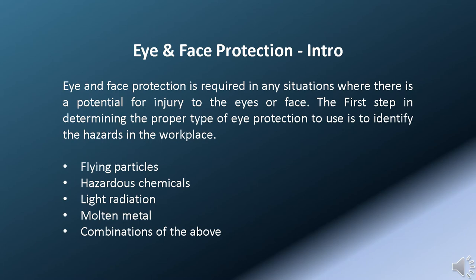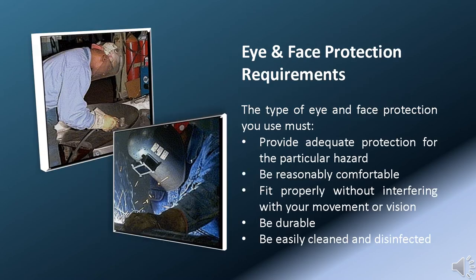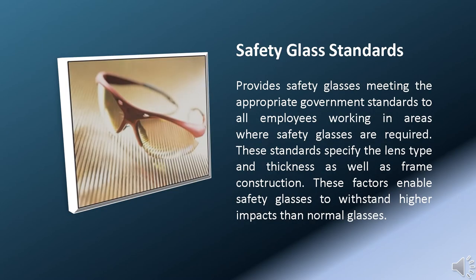Eye and face protection is required in any situation where there is a potential for injury to the eyes or face. The first step is to identify the hazards in the workplace: flying particles, hazardous chemicals, light radiation, molten metal, and combinations of the above. The type of eye and face protection you use must provide adequate protection, be reasonably comfortable, fit properly without interfering with movement or vision, be durable, and be easily cleaned and disinfected. Safety glasses meeting the appropriate government standards are provided to all employees working in areas where safety glasses are required.